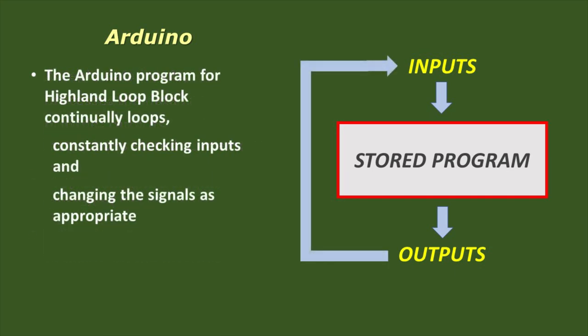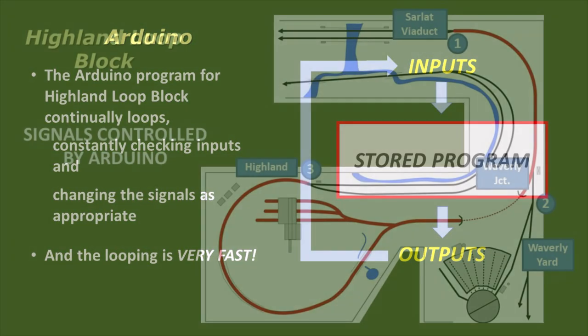On the Willow Creek, the Arduino is continually looping, checking to see what's happening in Highland Loop block, and setting signals accordingly to control the trains. This loop is very fast, so there's no delay in setting the signals.